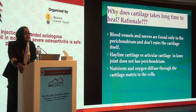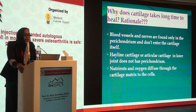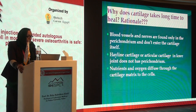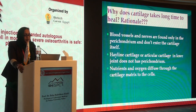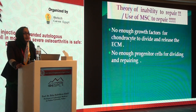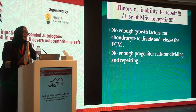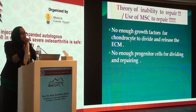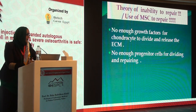So what is the hypothesis — why does cartilage take a long time to heal in the knee? Blood vessels and nerves are found only in the perichondrium and do not enter the cartilage itself. Hyaline cartilage or articular cartilage in the knee joint does not have a perichondrium layer. Nutrients and oxygen diffuse through the cartilage matrix to the cells. The theory of inability to repair is that there may not be enough growth factors for chondrocytes to divide, or there are not enough progenitor cells for dividing and repairing.